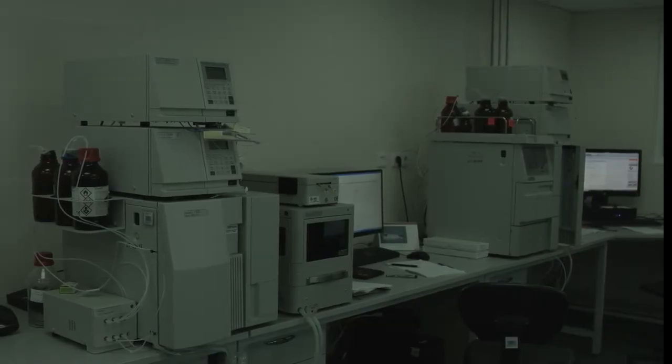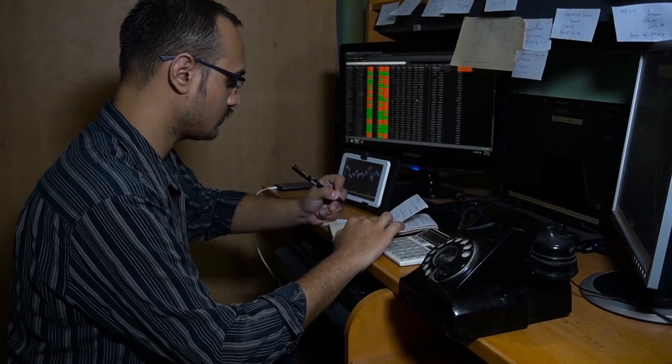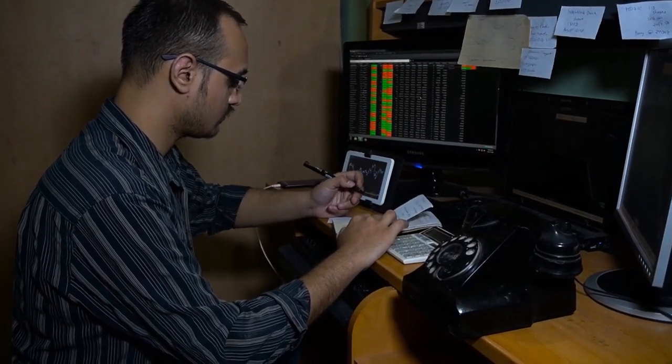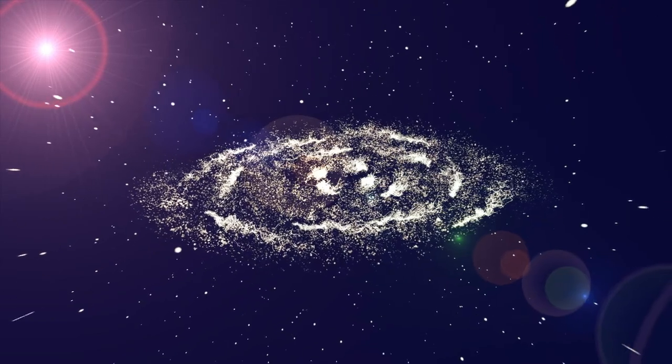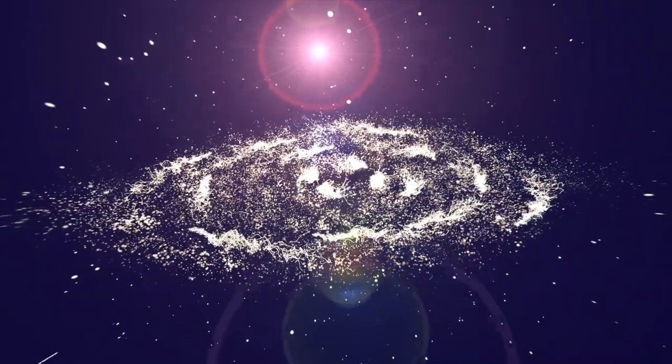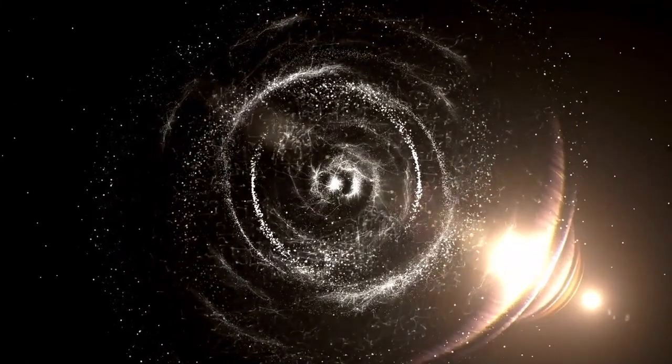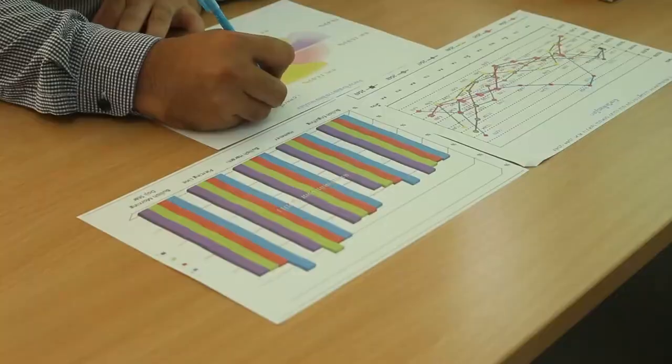For centuries, people have wondered whether we are alone in the cosmos. The more we learn about the vast number of galaxies and stars in the observable universe, the more we begin to think that there may be countless other planets, possibly even other forms of life somewhere out there. And if there are so many galaxies we can see, then there could be even more in the parts of the universe we cannot see. The idea that there could be millions or even billions of other galaxies beyond our reach is both mind-blowing and exciting. It sparks our imagination and encourages us to keep asking questions.